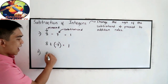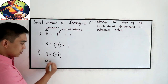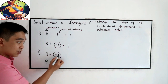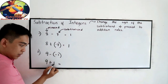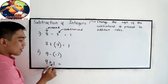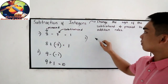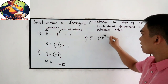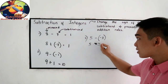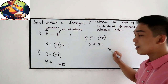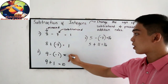Number 2: 9 minus negative 1. Copy the minuend, change the sign of the subtrahend — it will become positive 1 — then proceed to addition. So that gives us 5 plus 11, which is 16. So this is equal to 16, which is positive 10.